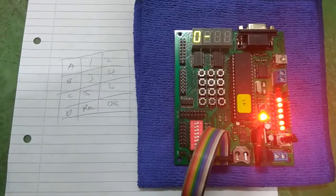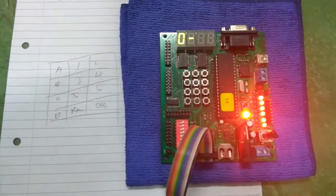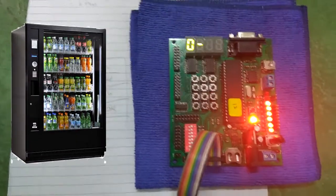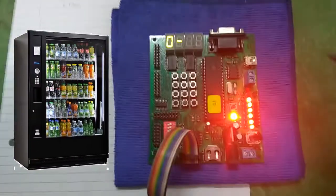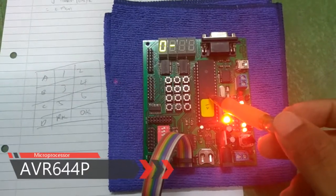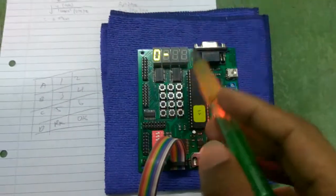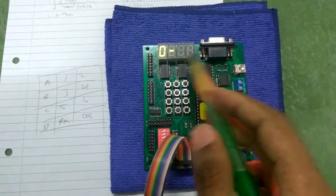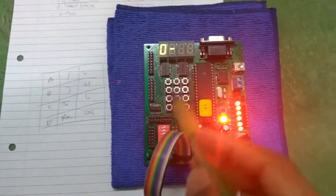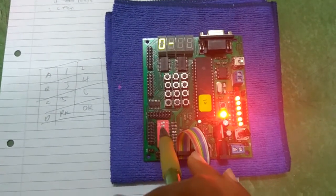Welcome to our microprocessor group project from group one. In this project we are simulating a vending machine. For this system we are using an AVR 644p microprocessor and a development board which includes four seven-segment LEDs, 12 push buttons, eight dip switches, and some output LEDs to show the system output.